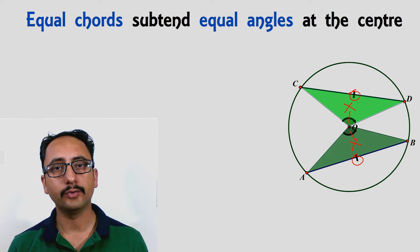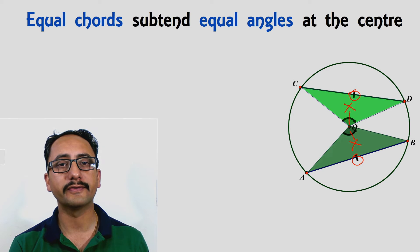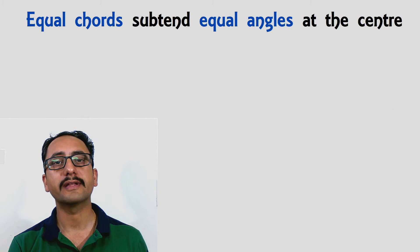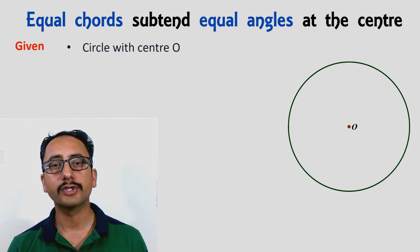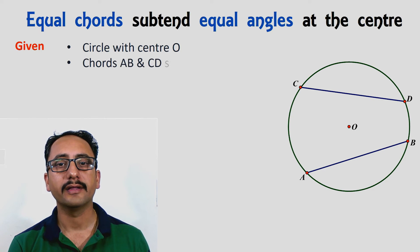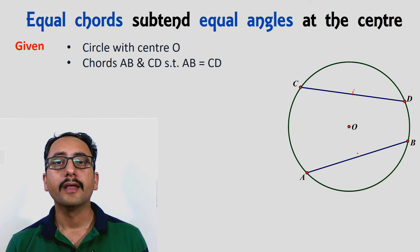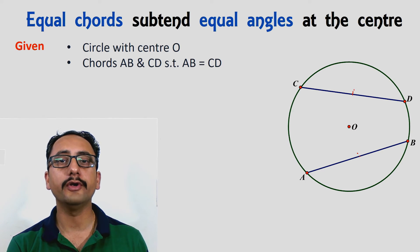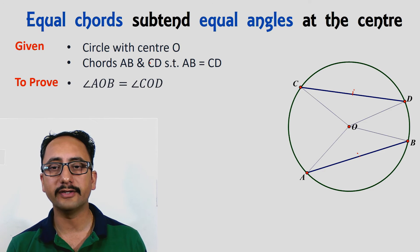Let us start with the proof step by step. Step number one is we will be writing whatever is given to us. We are given a circle with center O in which the chords AB and CD are given, and both the chords have the same length, so these two chords are equal. Now what we are going to prove is the angle subtended by the chords at the center, that is angle AOB is equal to angle COD.